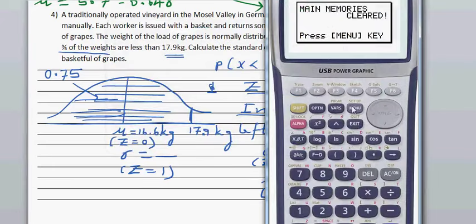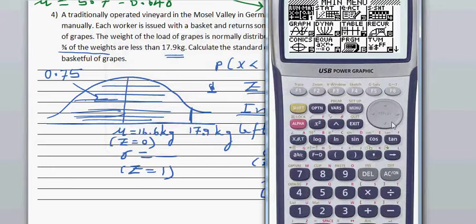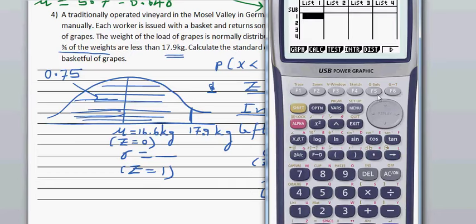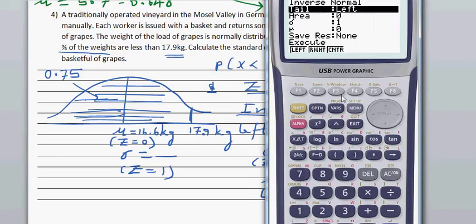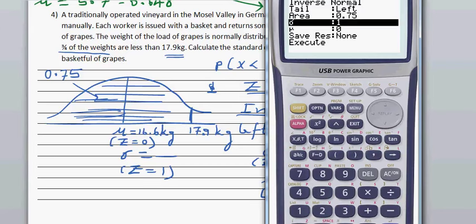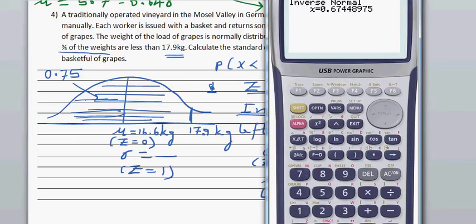Go to stats, F5 distribution, F1 normal, and go to inverse normal. The left area by default is 0.75. Standard deviation is 1 and mu is 0. That is 0.670, 0.675.